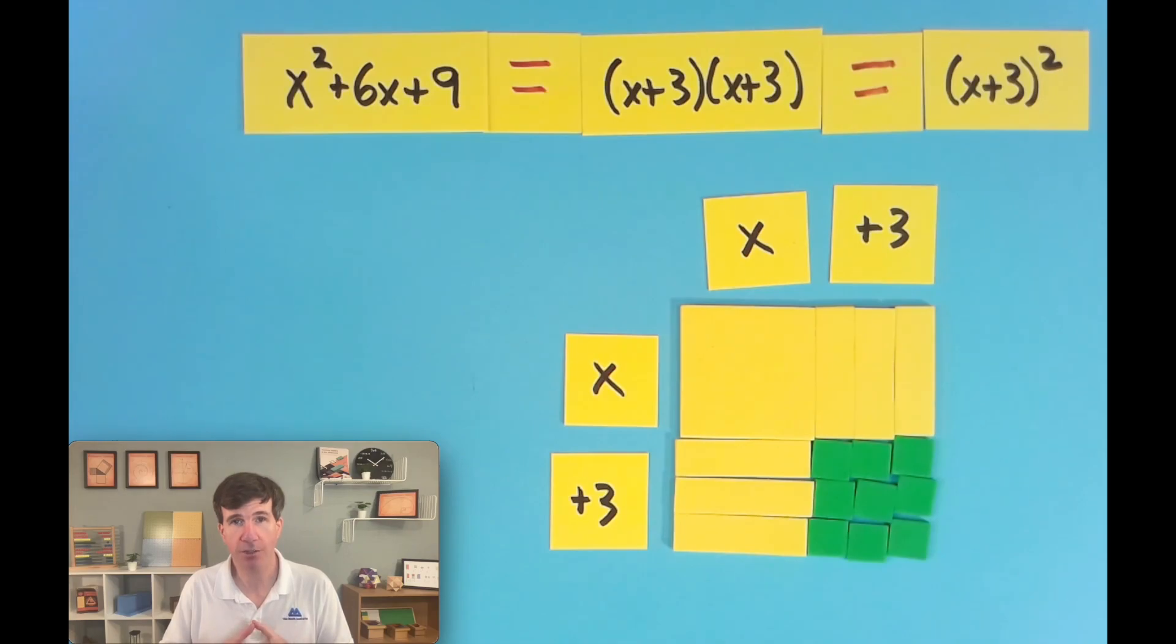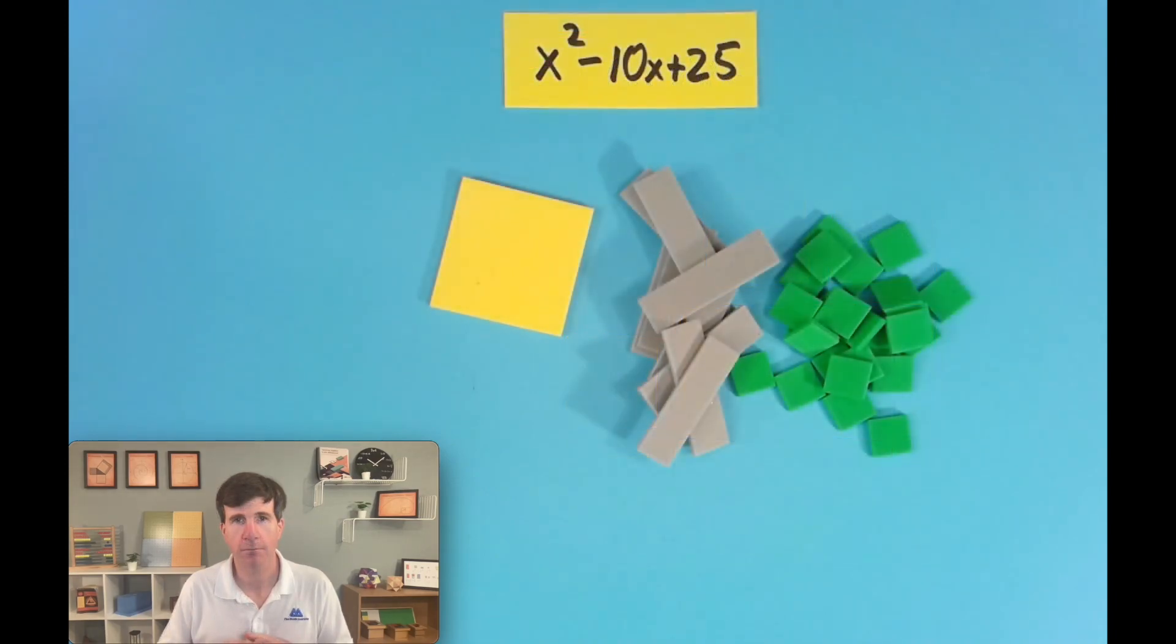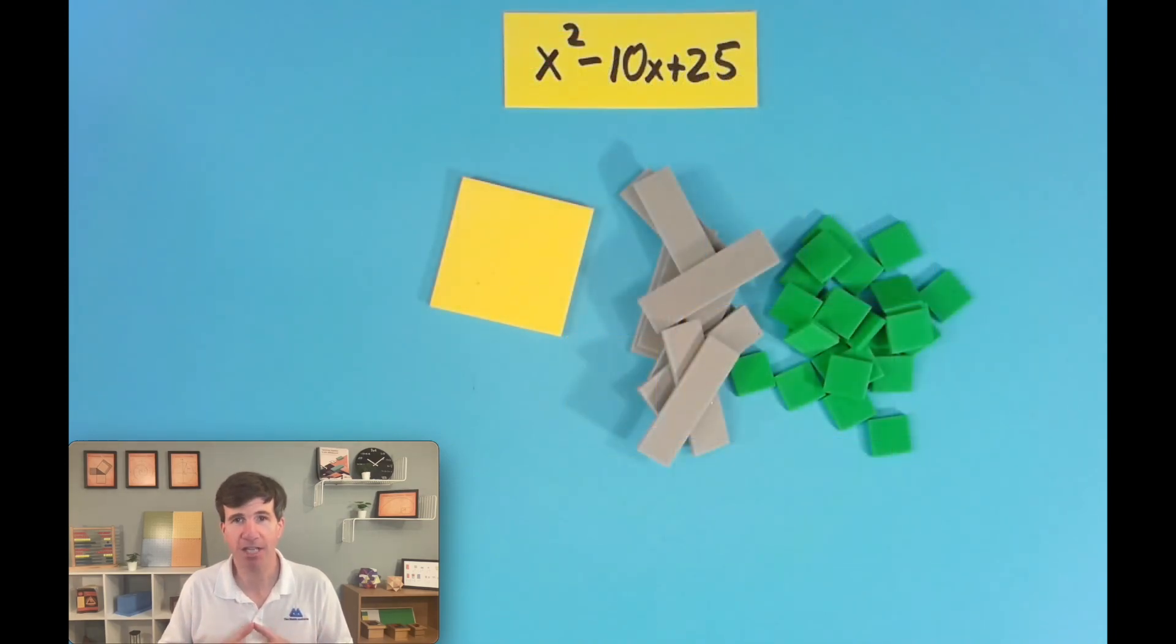And then I can do one more example with the students. I can ask them to factor something like this using the materials. Here we have x squared minus 10x plus 25. And when I ask students to make these pieces into a rectangle, they're going to come up with a square again that'll look like this.